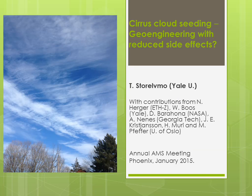I'll be talking about a relatively unexplored geoengineering mechanism, namely cirrus cloud seeding. The purpose of cirrus cloud seeding would be to reduce the strong greenhouse effect that these cirrus clouds have. Note that this type of geoengineering does not target short-wave radiation — it targets long-wave radiation, so it doesn't fit under the traditional SRM umbrella.